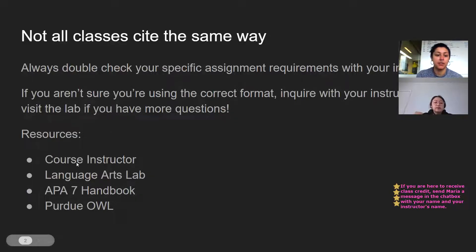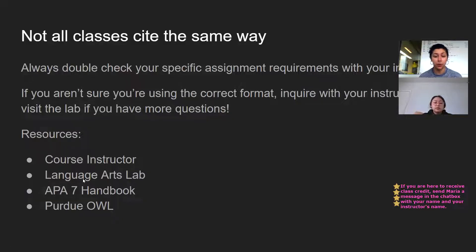Resources available to you include your course instructor, the Language Arts Lab, the APA 7 Handbook, and Purdue OWL. These are all things that will help you get your citations done.